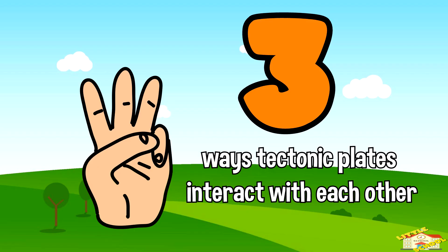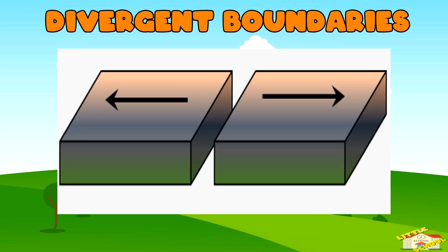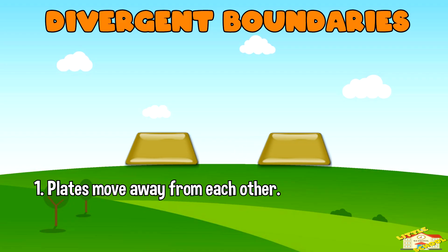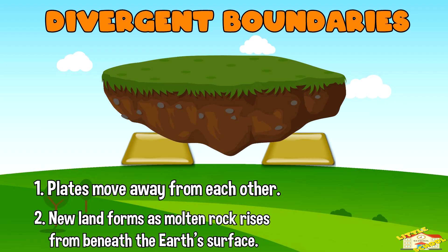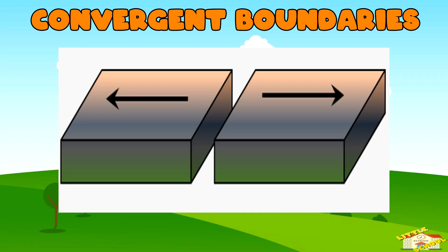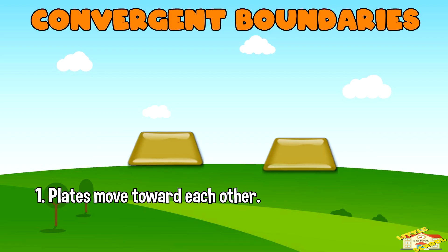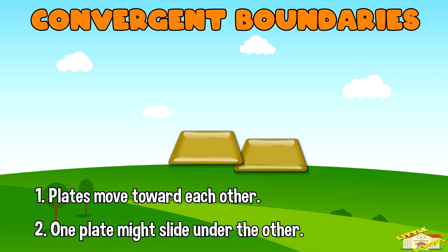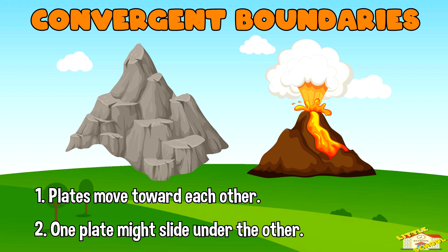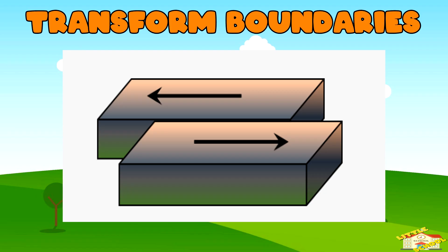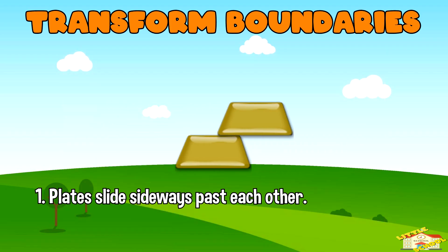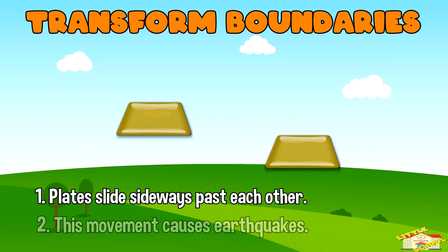Let's learn about the types of plate movement. There are three main ways tectonic plates interact with each other. Divergent boundaries: plates move away from each other and new land forms as molten rock rises from beneath the earth's surface. Convergent boundaries: plates move toward each other and one plate might slide under the other, causing mountains or volcanoes to form. Transform boundaries: tectonic plates slide sideways past each other, causing earthquakes.